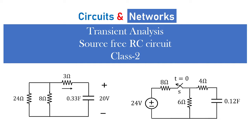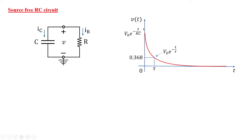Welcome to a new session of circuits and networks. In today's transient analysis class 2 we are going to see some numericals based on source-free RC circuits. In class 1 we covered the basic concept: when the capacitor is charged, it discharges its energy through the connected element in a fashion that is decaying in nature.